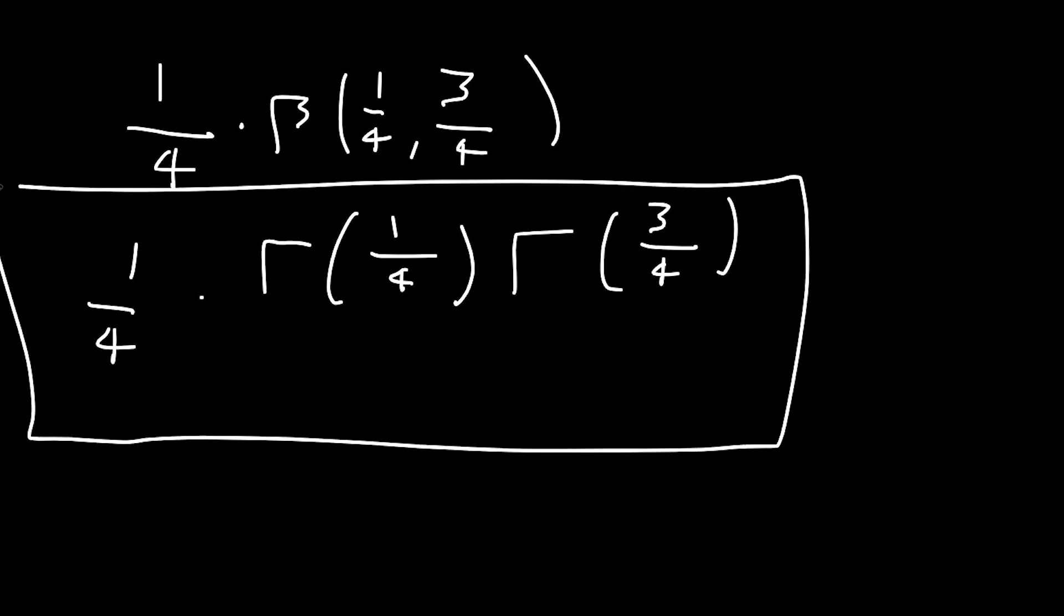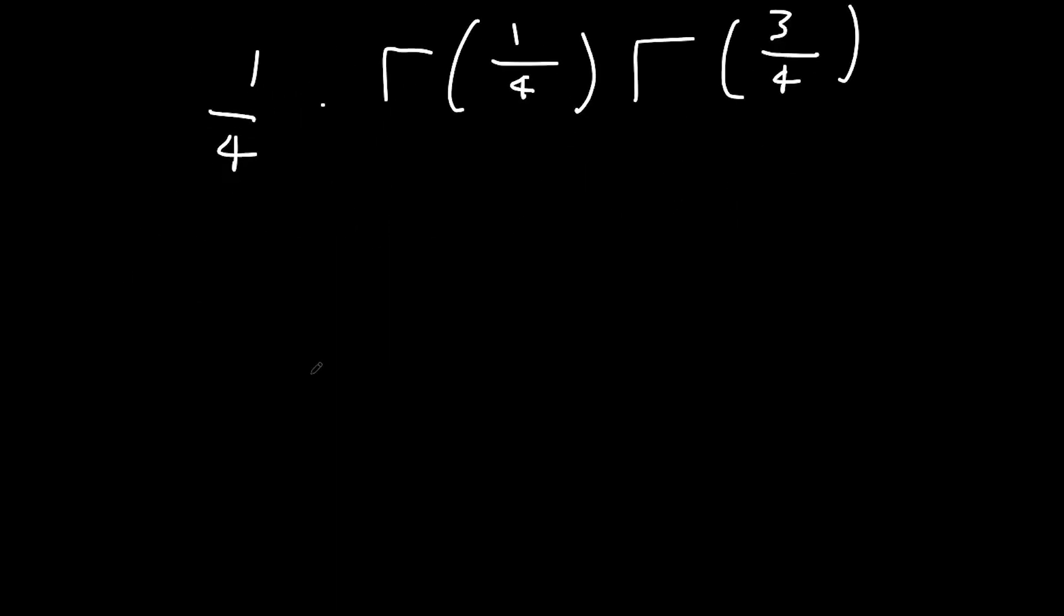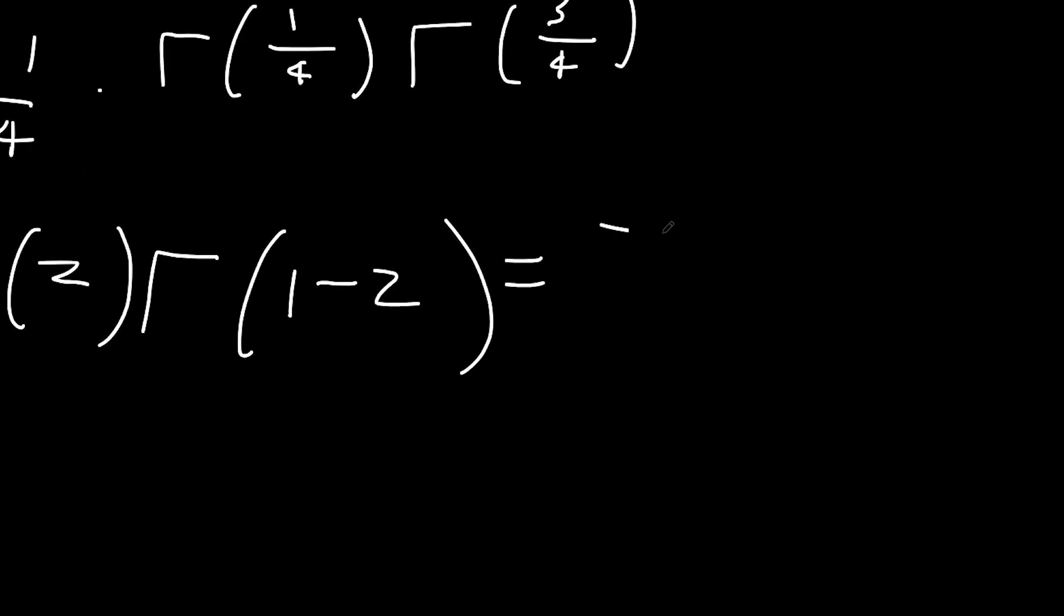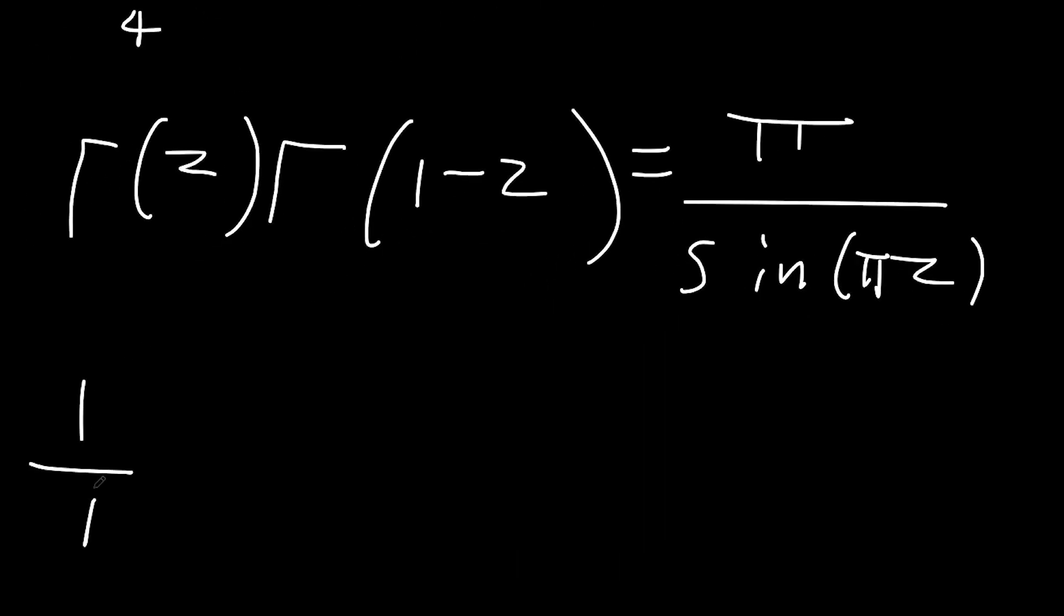So we want to work out what this is. Now we can use the Euler reflection identity where gamma of z times gamma of one minus z is equal to pi over sine of pi z. So using this we have a quarter times pi over sine of pi over four.